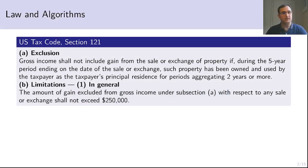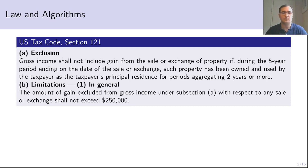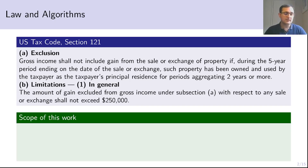Let's start with an example that will illustrate the subject of our study. This is an excerpt from the US tax code, more especially section 121, which defines how much you can exclude from your gross income whenever you have made a gain from the sale of a property which you have owned or used in the recent past. There is also a paragraph which limits how much you can exclude. This example showcases what we're going to try and formalize, which are decision procedures that are specified by legislative text.